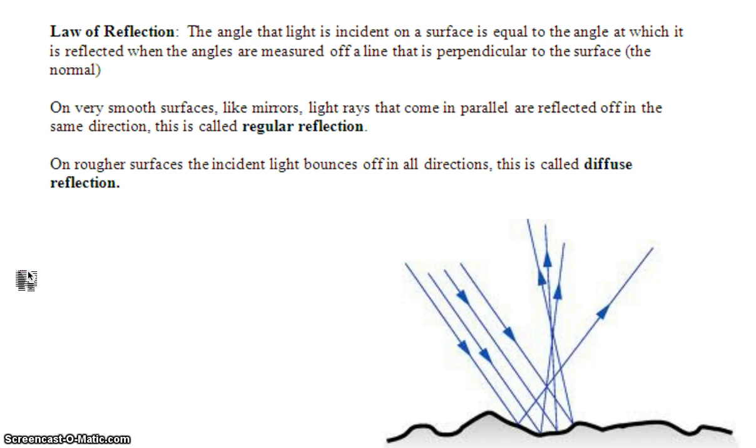First one is probably the simplest to understand, and that's reflection. When light is reflecting off of a surface, it's kind of the same thing as like a ball reflecting at a wall.